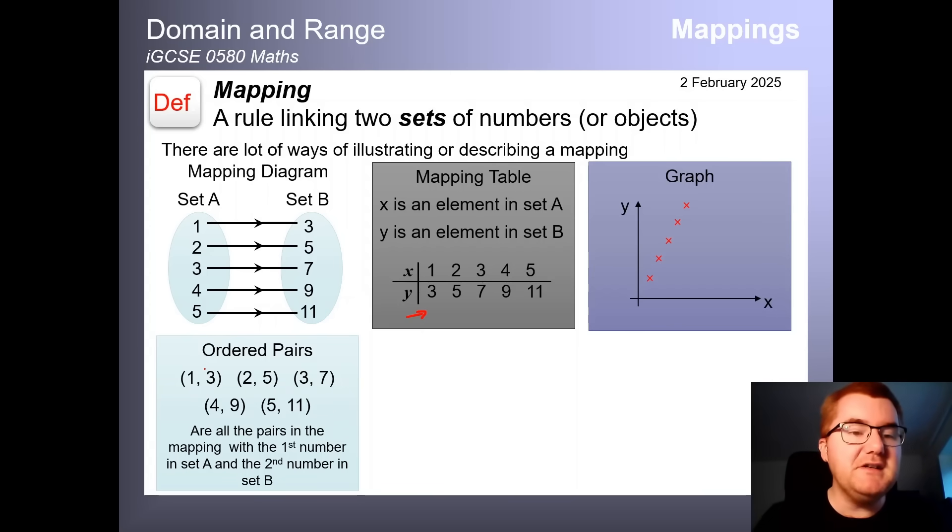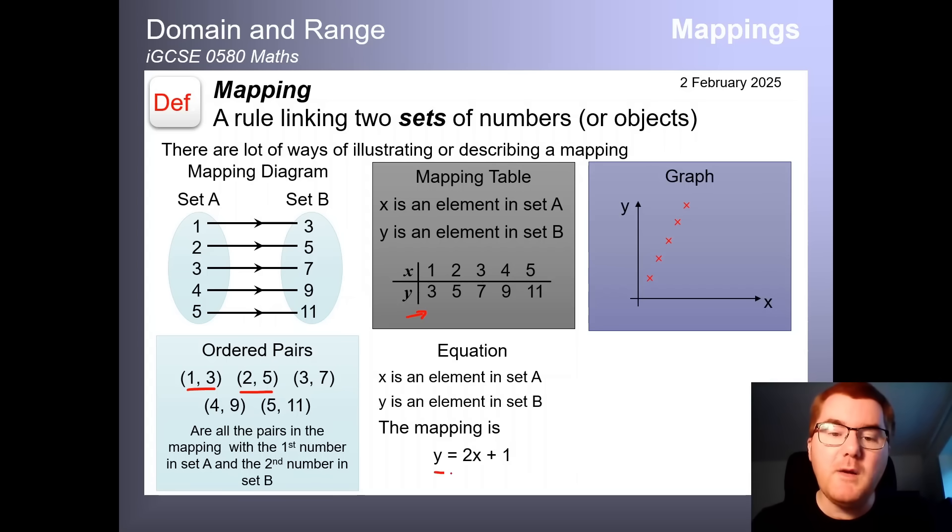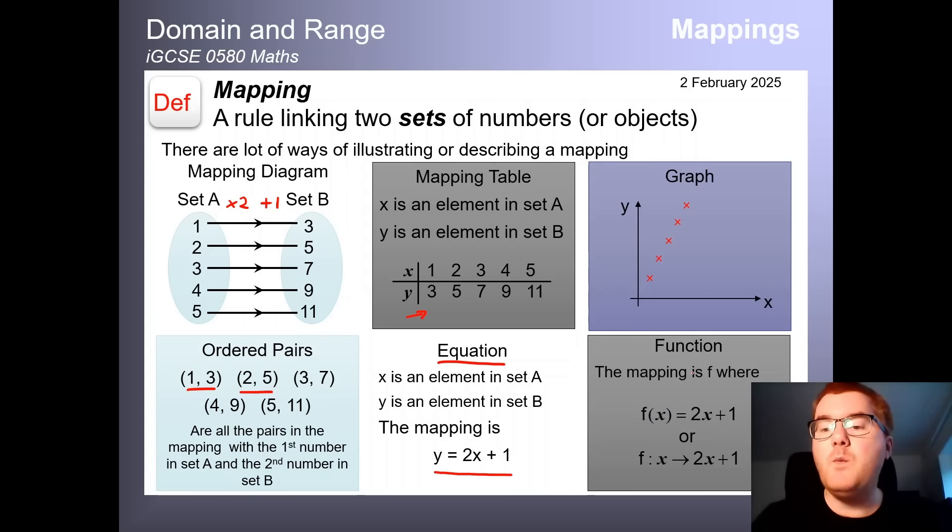We can also think of this as ordered pairs. Notice these ordered pairs 1, 3, 2, 5, are just coordinates. What you're probably the most familiar with is an equation. So notice this relationship here, we multiply by two, and then we add on one. That's essentially going from a to b, and we can think of this as y equals 2x plus 1. All we're adding in here is so-called function notation, which is very similar to the equation notation. The only thing to be aware of is instead of writing y, we write f of x instead. That's all a function is.